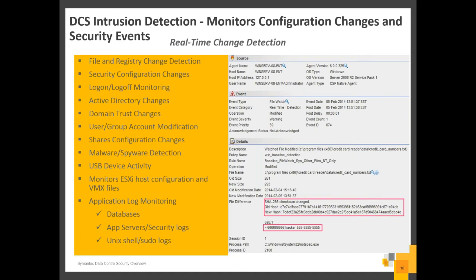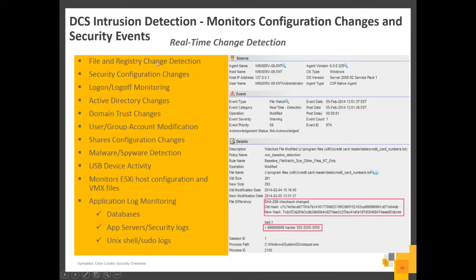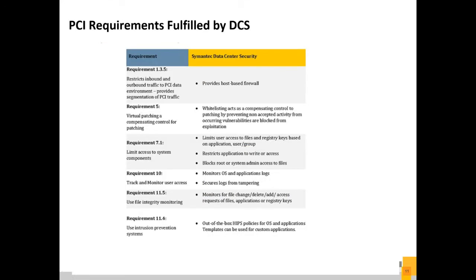IDS is passive — it won't block in any category, but it tells you in real time what's happening on the box so you can investigate and respond out of band. If you only purchase the monitoring edition, that's real-time visibility for both Windows and UNIX systems across your environment. This also satisfies PCI compliance requirements — specifically PCI DSS 11.5 for file system integrity monitoring, but it does more than that. The agent satisfies multiple PCI compliance requirements beyond just 11.5.